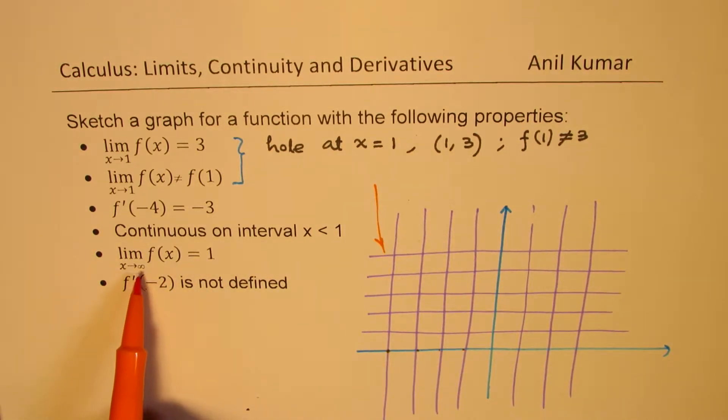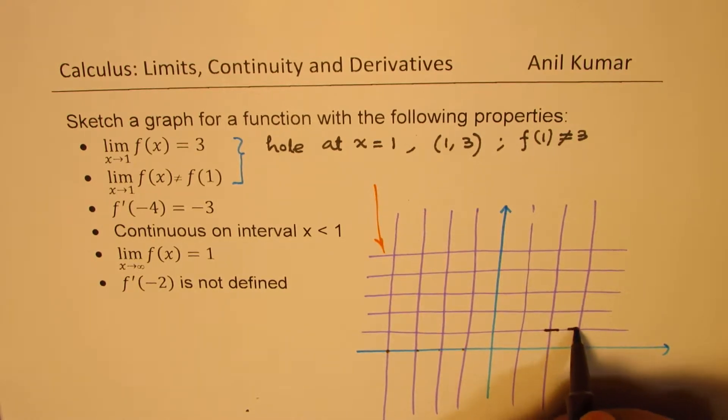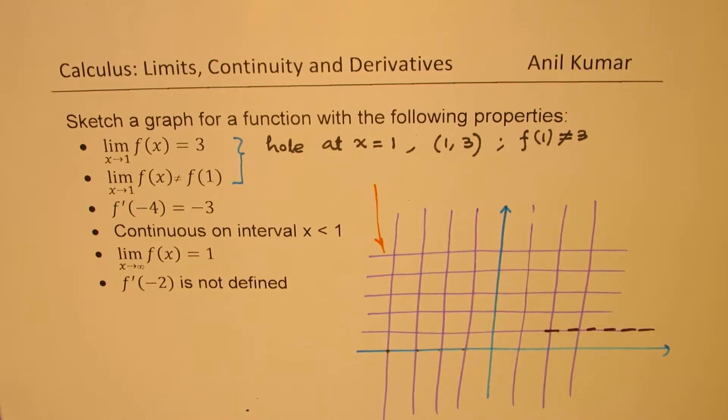And then we have that limit of the function as x approaches positive infinity is 1. That means we have a horizontal asymptote. So when you are approaching here, it is 1. So you could approach from the positive side.